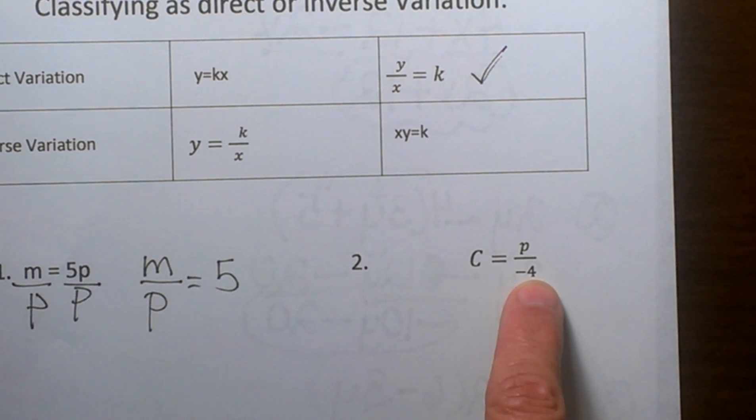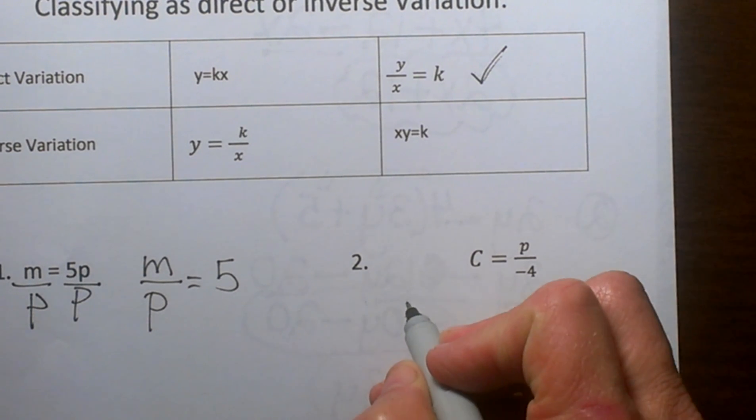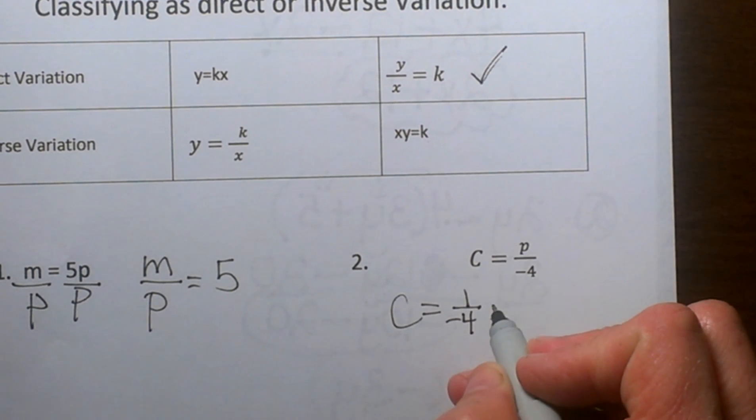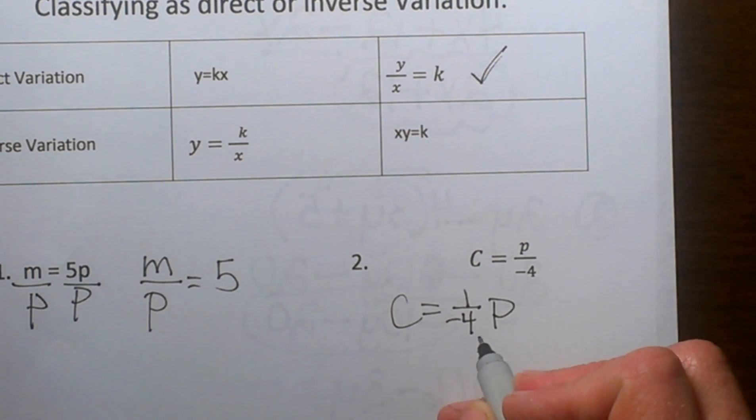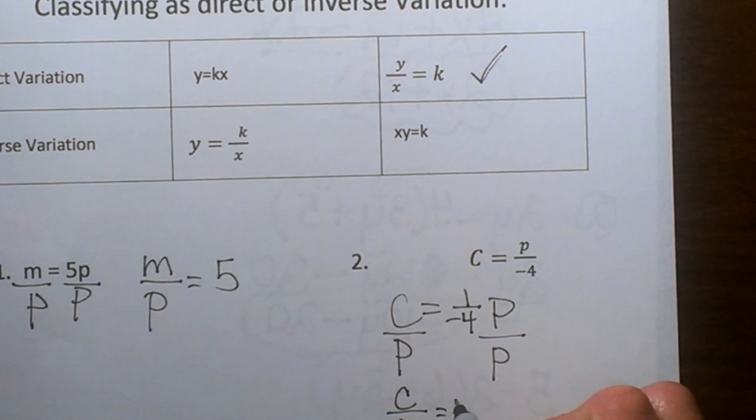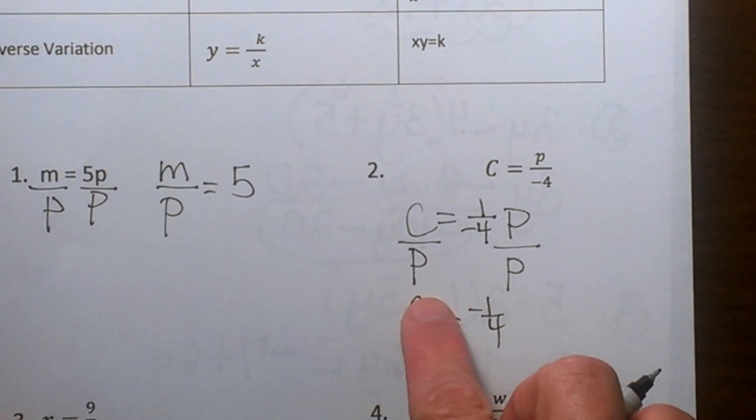So let's get the variable on both sides. I'm going to change the form of this equation around. I'm going to make this c equals negative one fourth times p. So I'm going to divide both sides by p and I get c over p equals negative one fourth. Okay so now I have my variables on the same side.